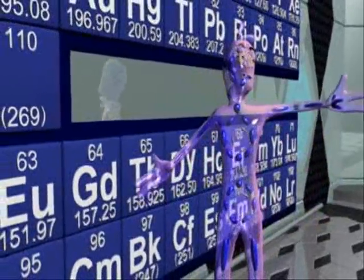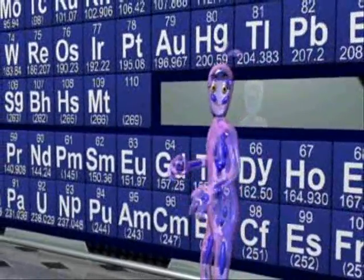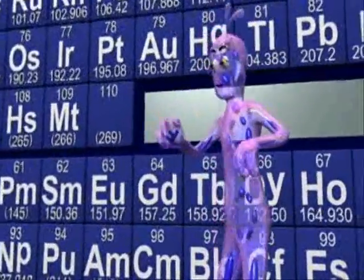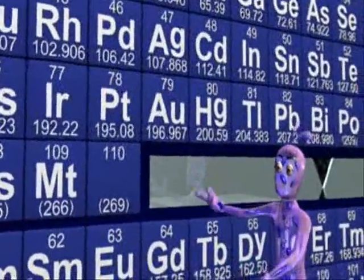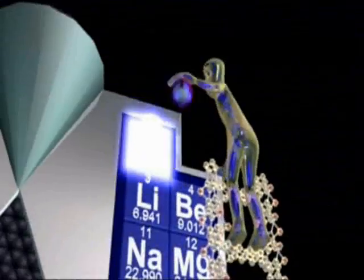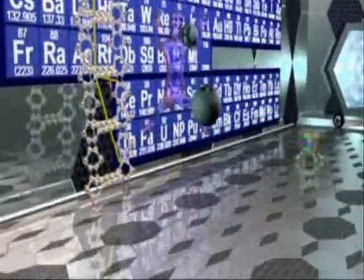Gold has 79 protons and is number 79 on the periodic cabinet. Periodic table! Cabinet! Table! Here — catch!